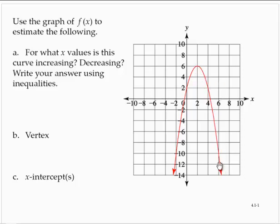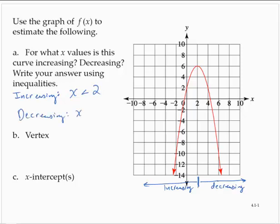When we're talking about the x values, got to remember to answer in terms of the x values. It was increasing, and using an inequality, it was increasing to the left. So if I sort of put a boundary here, here is where it was increasing, and then to the right of that boundary is where it was decreasing. So it was increasing where x was less than 2, decreasing where x is greater than 2.